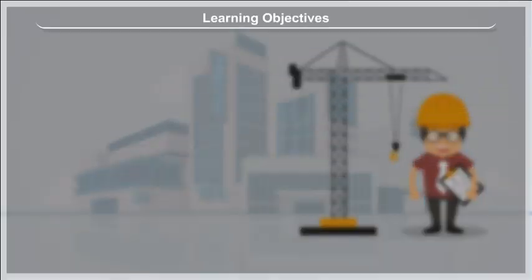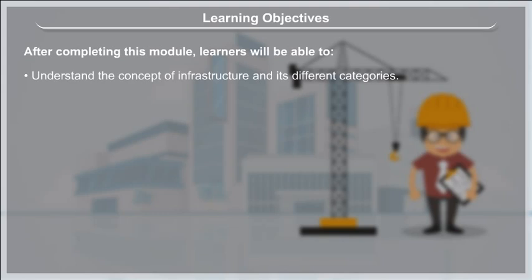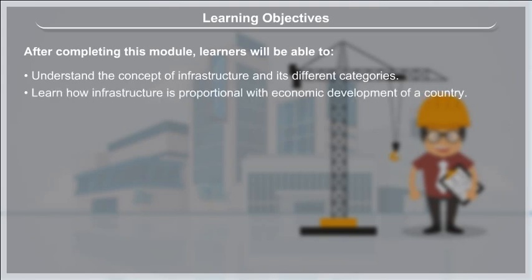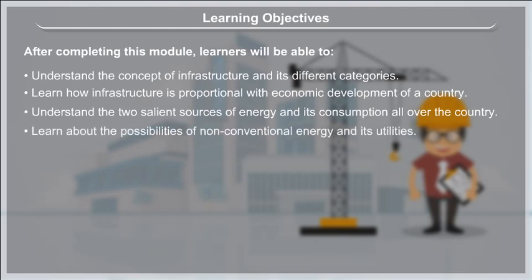Learning Objectives. After completing this module, learners will be able to understand the concept of infrastructure and its different categories. Learn how infrastructure is proportional with economic development of a country. Understand the two salient sources of energy and its consumption all over the country. Learn about the possibilities of non-conventional energy and its utilities.